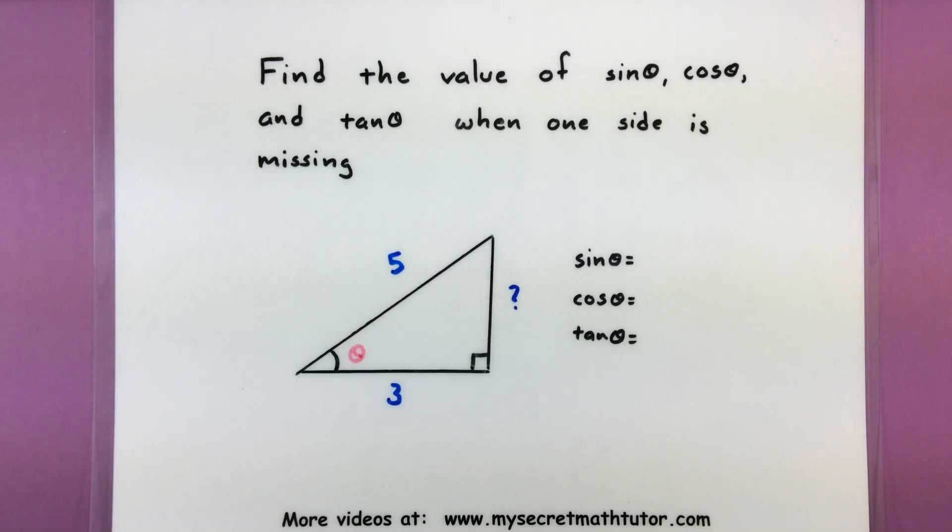Hello YouTube! For this video we're going to work on finding the value of sine, cosine, and tangent when one side of our right triangle is missing.